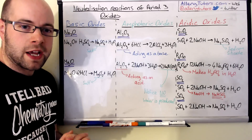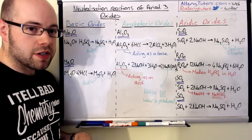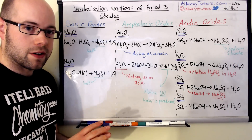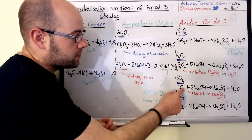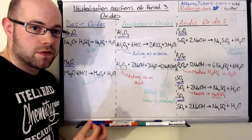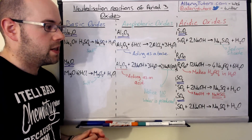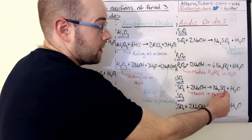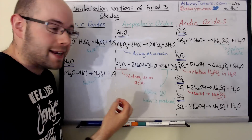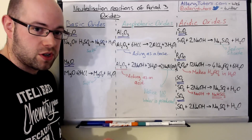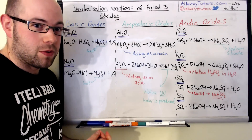Now looking at sulfur oxides — there are two types: sulfur dioxide and sulfur trioxide. Sulfur dioxide can react with two moles of sodium hydroxide to form sodium sulfite, Na₂SO₃, plus water. You can actually break this up into two separate equations, so watch out for that.